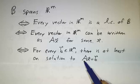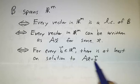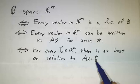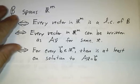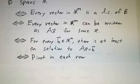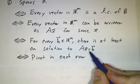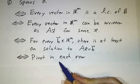A solution to Ax equals b is a way to write b as a linear combination of the columns of A. And we know when that happens, you can always find a solution if there's a pivot in each row.